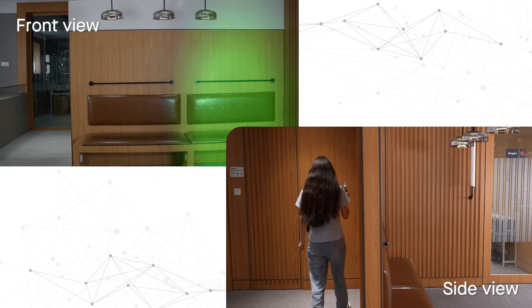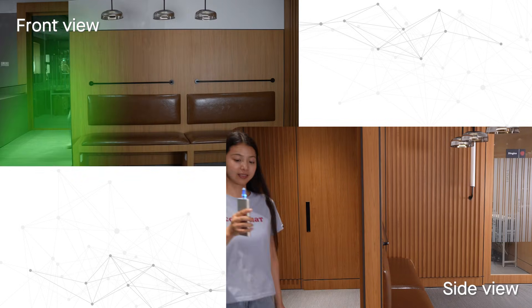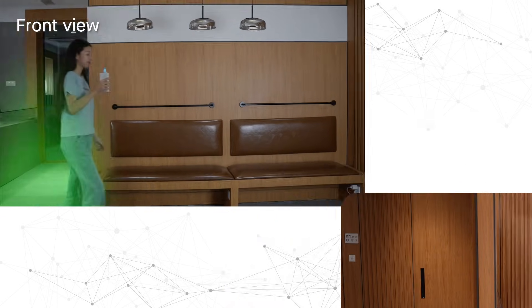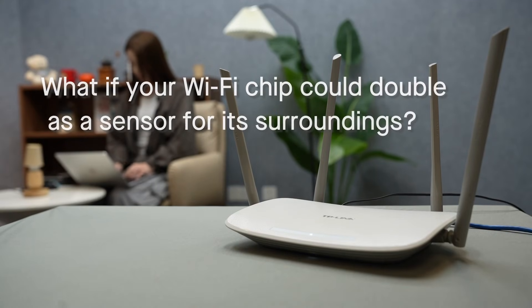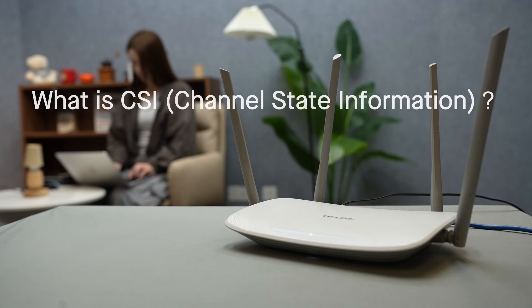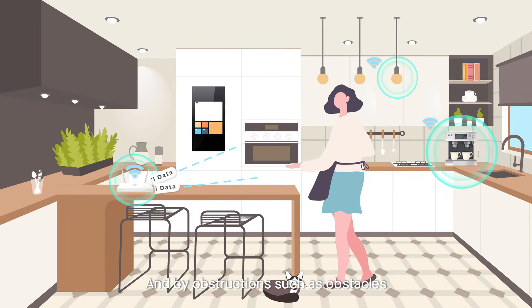During transmission, Wi-Fi signals are affected by wall reflections and obstructions such as obstacles, which reduces their accuracy. To solve this problem, the Wi-Fi protocol itself includes a mechanism.